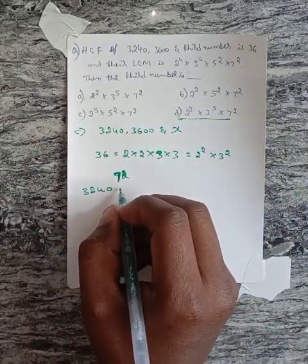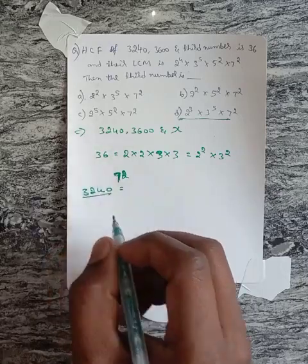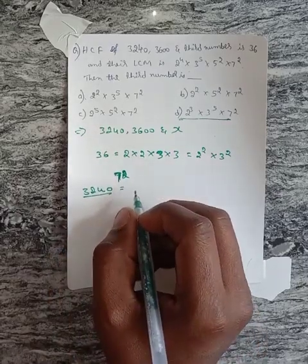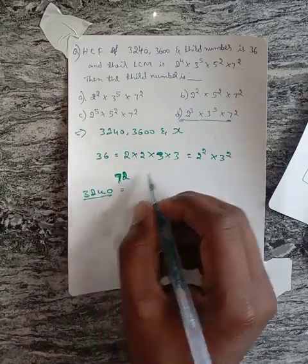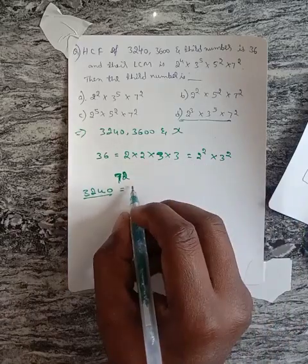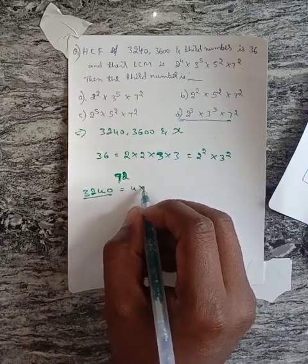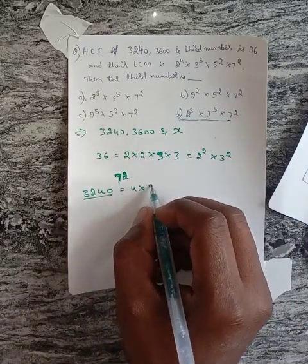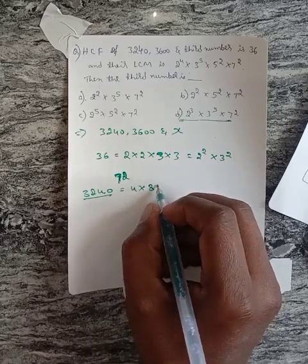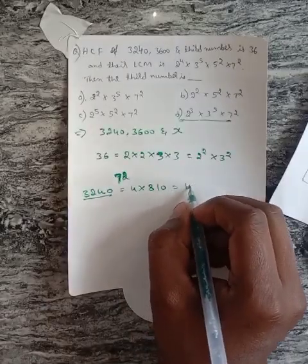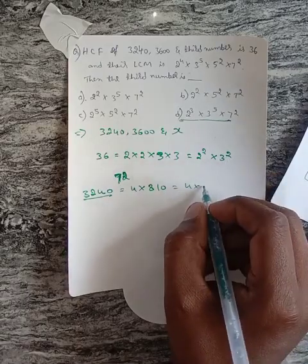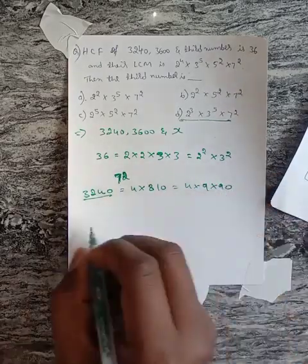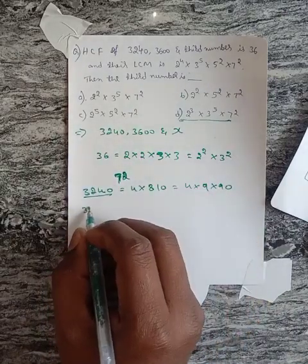The factors of 3240: when we divide by 4 it's 810, then 4 into 810 can be divided by 9, which is 9 into 90.